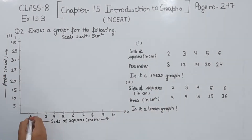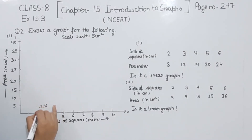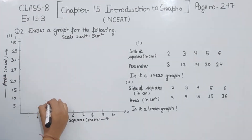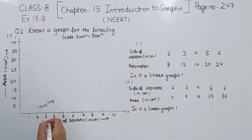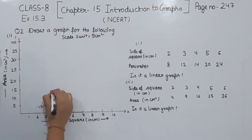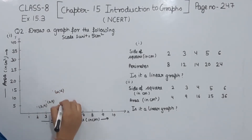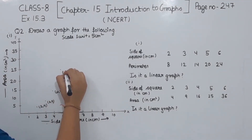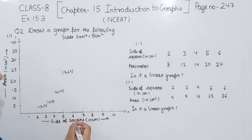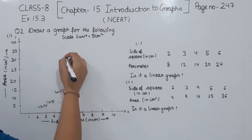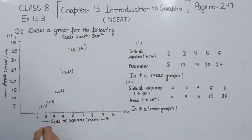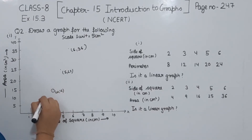The side of the square is 2, then the area is 4 — so the point is (2, 4). The side is 3, then the area is 9 — so the point is (3, 9). The side is 4, then the area is 16 — so the point is (4, 16). When the side is 5, the area is 25 — so the point is (5, 25). When the side is 6, the area is 36 — so the point is (6, 36). These are all the points we are having. We are going to join these points.